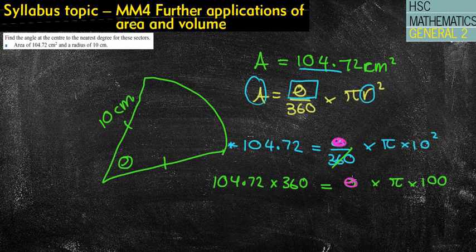Remember, I want to get this theta by itself. So I've got times π times 100. Well, what's the opposite of times π times 100? Well, you should know it's all divide because the opposite of times is divide.